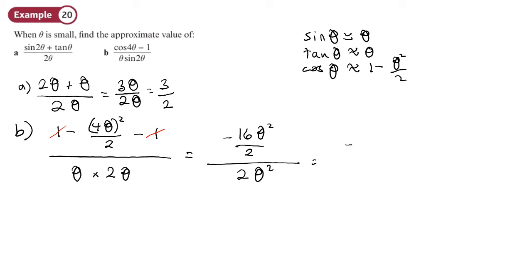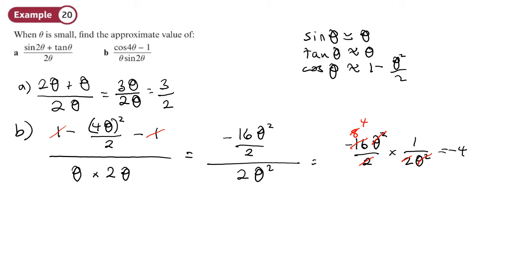That is the same as negative 16 theta squared over 2, times by the reciprocal. The theta squared cancels, the 2 cancels with the negative 16 to leave 8, and then the 8 and 2 cancel to leave 4 — so we're left with negative 4 as the answer. The book may say 4, but that's a mistake; it should be negative 4.